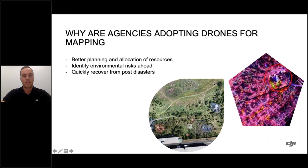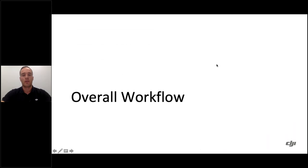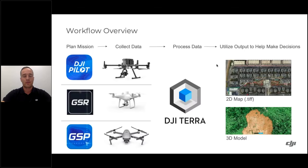The end result was better planning and allocation of resources for the team, identifying environmental risks before sending people in, and quickly recovering post-disaster with an additional tool in the toolbox. That example illustrates how maps and models are created, and how you could do that yourself with your agency or current fleet of drones.